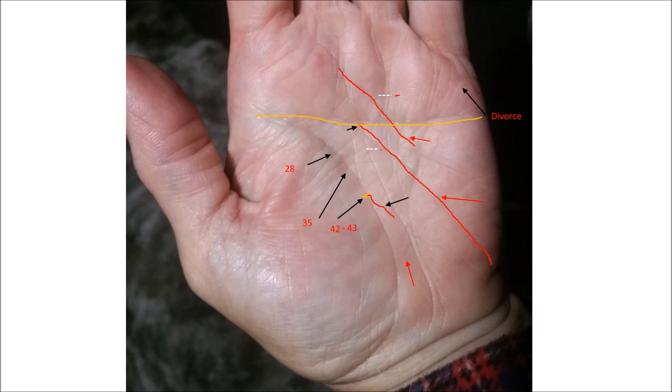Now I've marked here some stress lines around about 28 on the lifeline. It shows stress lines coming up to the simian line. And this is a normal stress line. In her case, it may be the time that she had a child. She confirmed that prior to having that child, she had some miscarriages. So there may have been some stress involved, either in conception or just general motherhood stress.